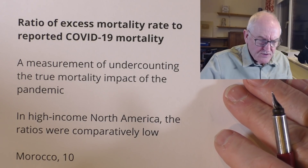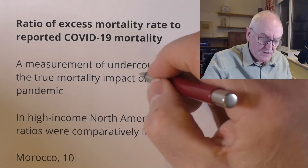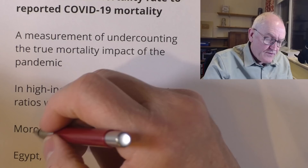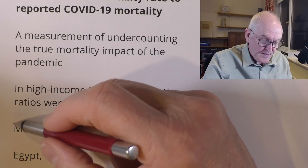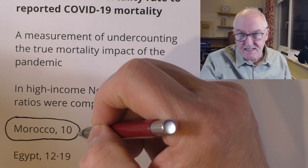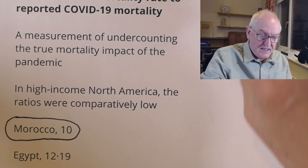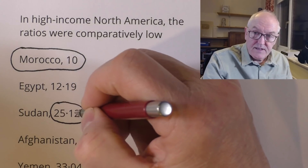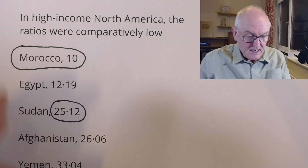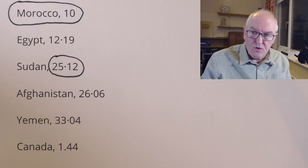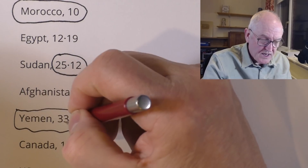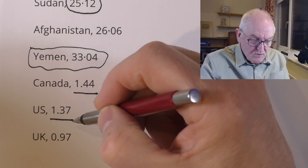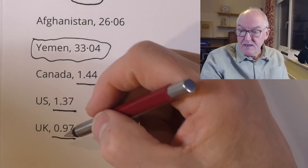Looking at the ratio of excess mortality rate to COVID-19 reported mortality — a measure of the undercounting of the true pandemic mortality. Morocco undercounted their deaths by a factor of 10. Egypt by 12.9. Sudan was 25 times — so 25 times more actual excess deaths than officially reported. Afghanistan was high, as you would expect. Yemen, of course, is a war-torn country, so some of those could have been due to the war, as well as massive underreporting. Canada was only 1.44 — so only slightly underreporting. The United States was 1.37. The United Kingdom was also slightly underreporting.